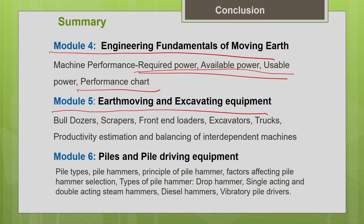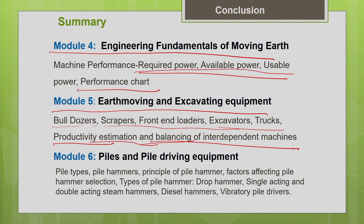In module 5, I introduced the different earth moving and excavating machines — bulldozers, scrapers, front end loaders, excavators, and trucks. We discussed the merits and limitations of all these machines. We worked out many illustrations on how to estimate the productivity of these machines, and also how to balance interdependent machines, which is very important because on a project site all machines work as a team and need to be balanced in both number and size.